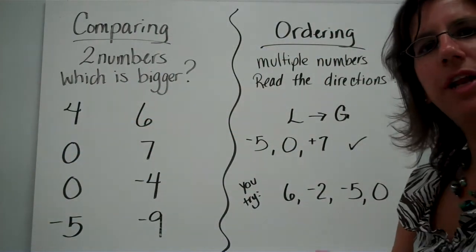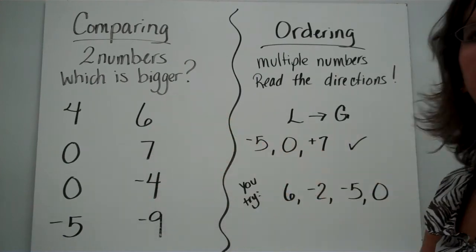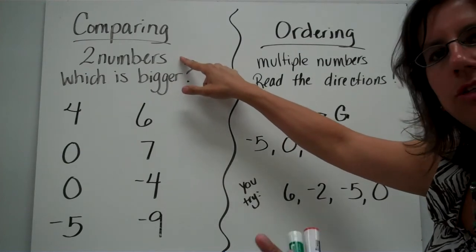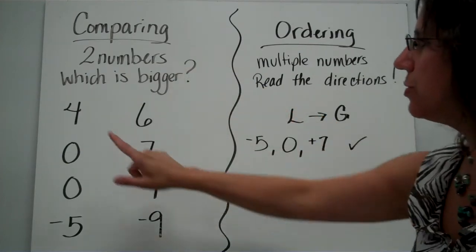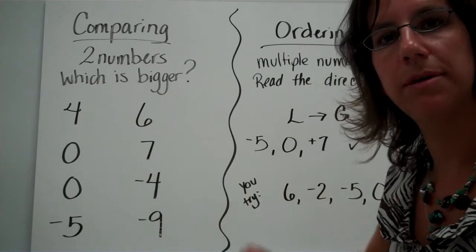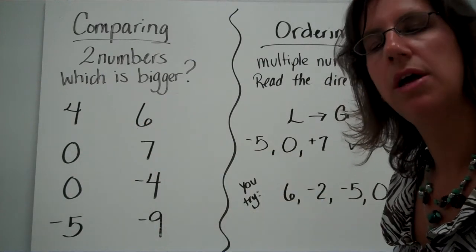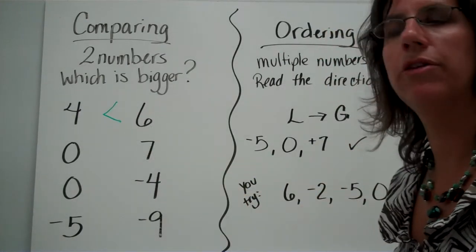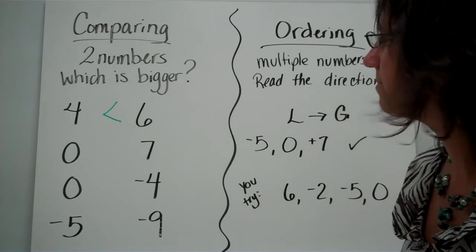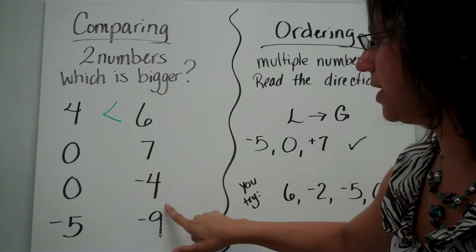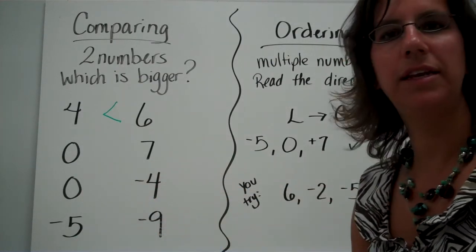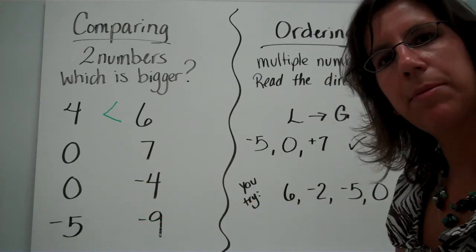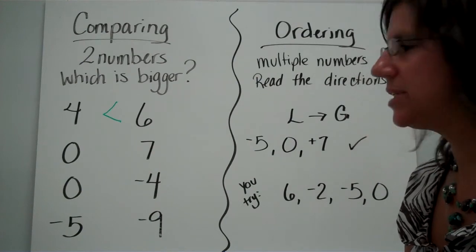There are different things you're going to have to be able to do with integers, and one of them is comparing them. Whenever you're comparing integers, you are trying to decide, looking at two numbers, which one is bigger. Here you have four and six — no symbols, so those must be positive four and positive six. You are going to be using those greater than, less than, or equal to symbols. You've got zero and seven, zero and negative four, negative five and negative nine. Go ahead and pause the video, write each of those examples down, and see if you can come up with the answers on your own.